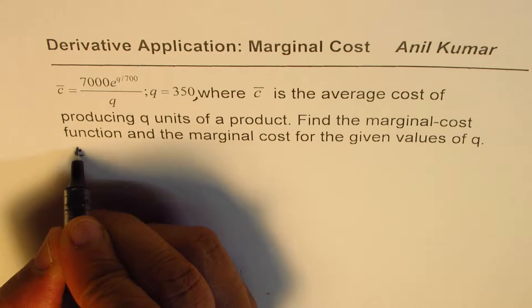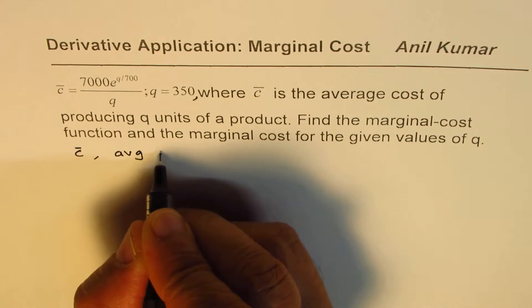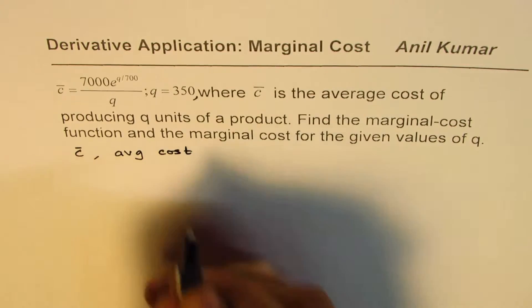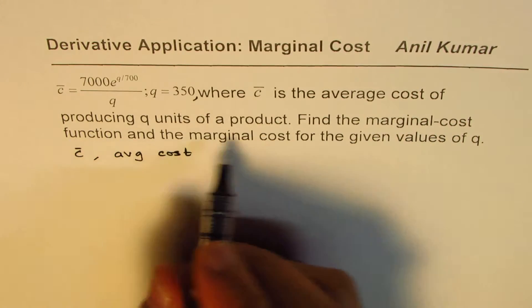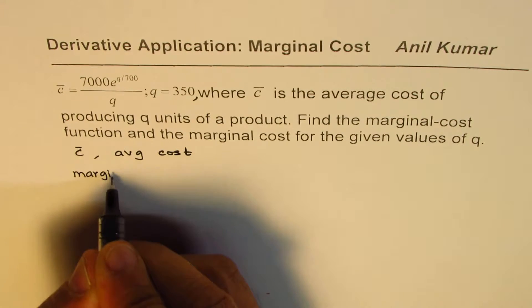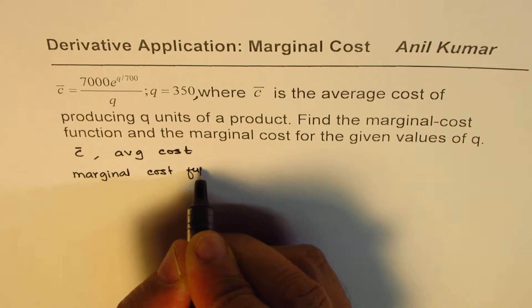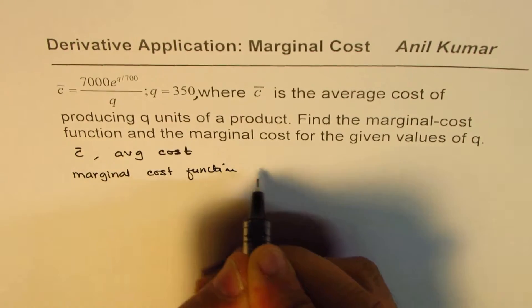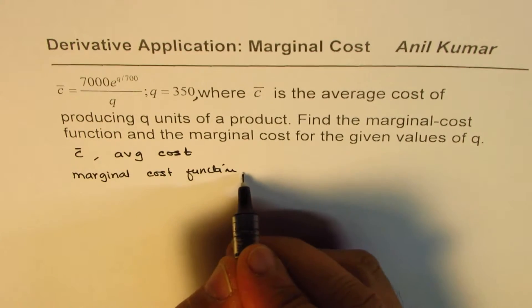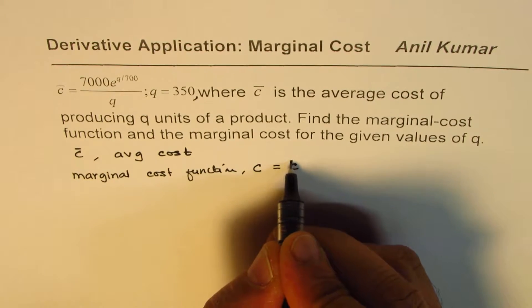The marginal cost function is the product of the average cost with the number of units q.